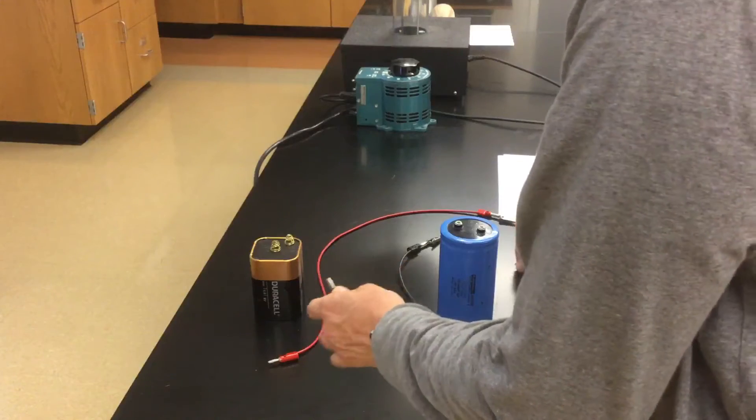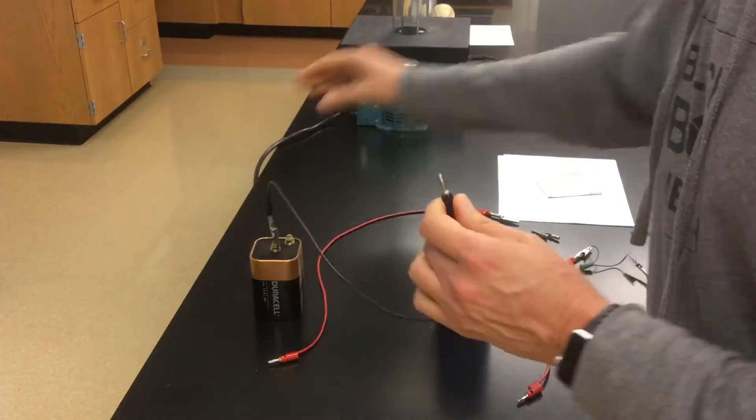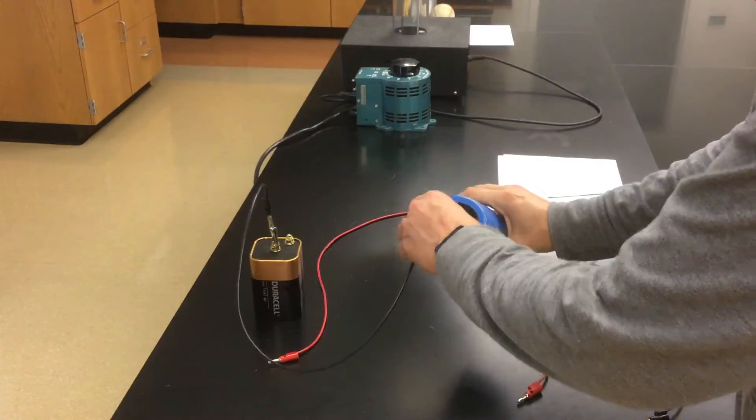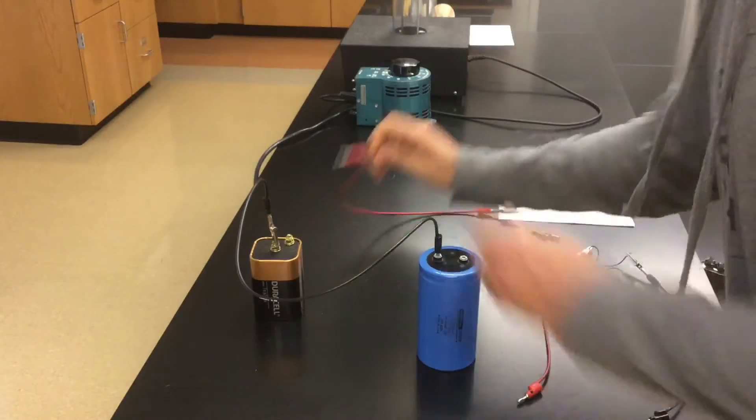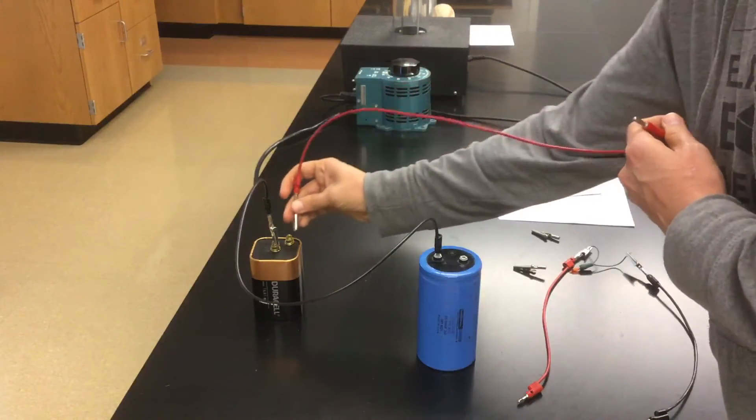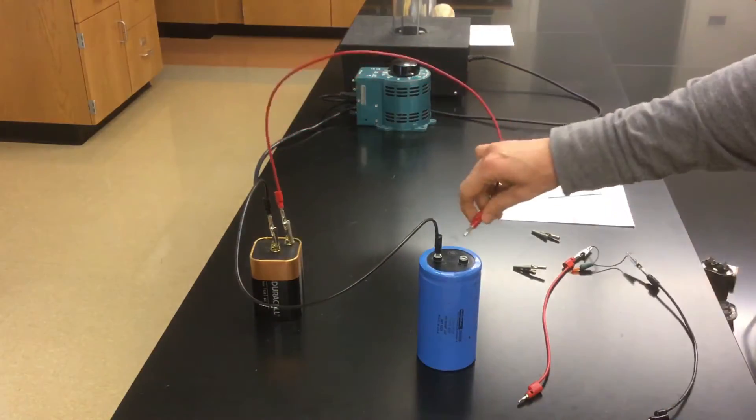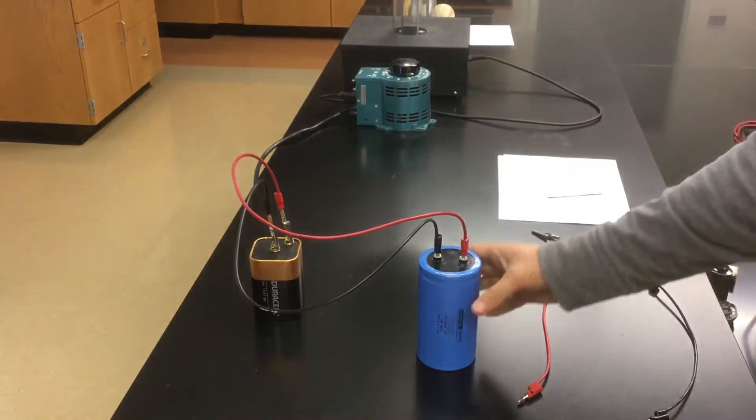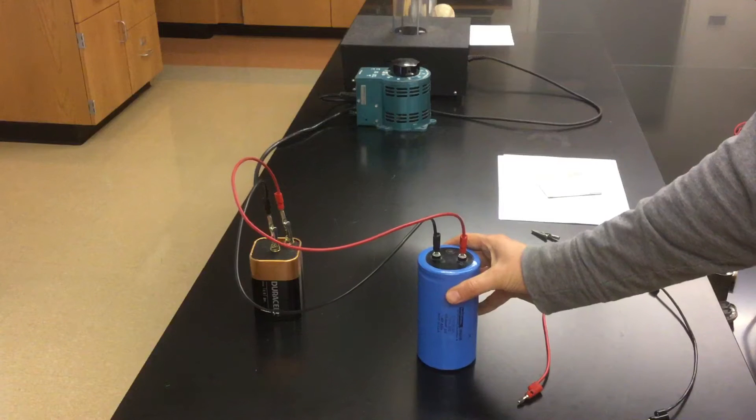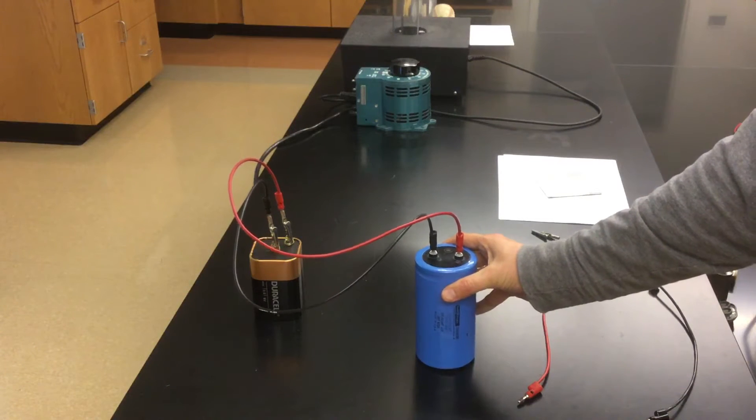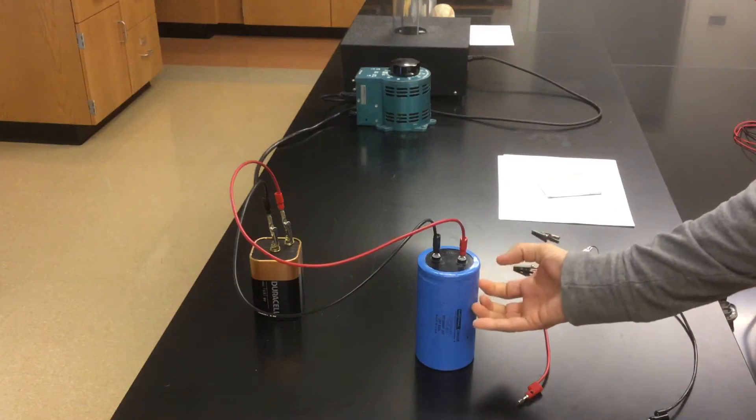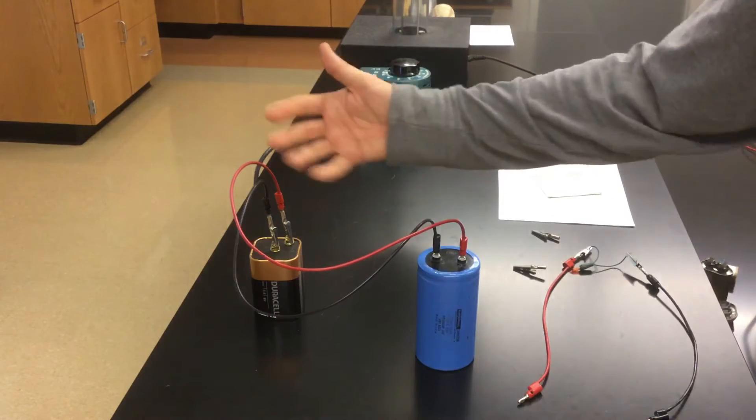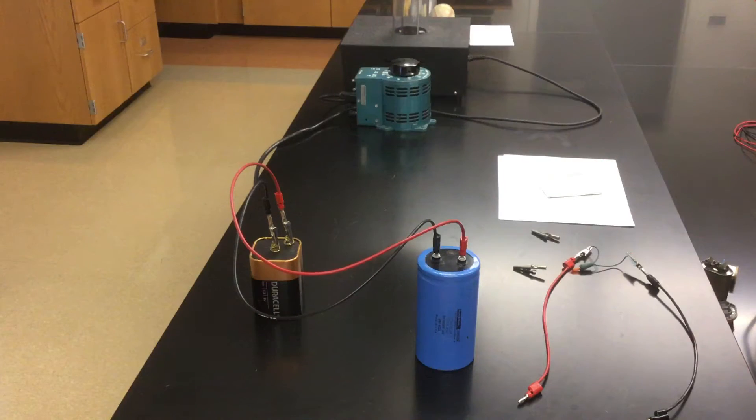If I connect the negative terminal of this battery to the negative input of this capacitor and connect the positive terminal of the battery to the positive terminal, then I've used six volts of electric potential difference to store charge. I've said I store charge on this capacitor and once the capacitor is full of charge then electricity stops flowing in the circuit.